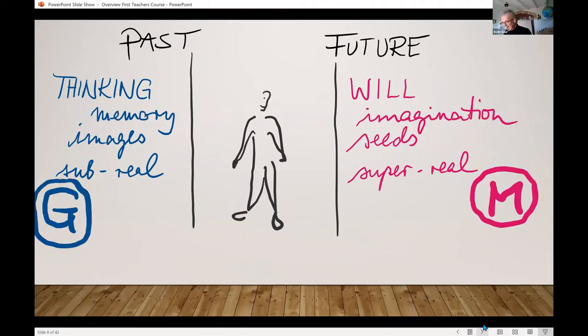If you're familiar with the language of Eurythmy, you might express it this way: in order to access the past, I have to distance myself from it. Anything I can picture is clearly not me. Whereas anything future-oriented, I have to go towards, reach for it in order to understand it.